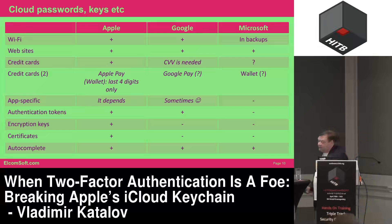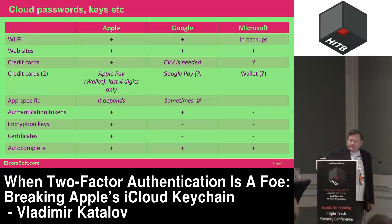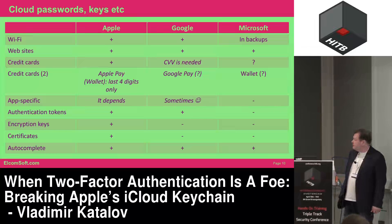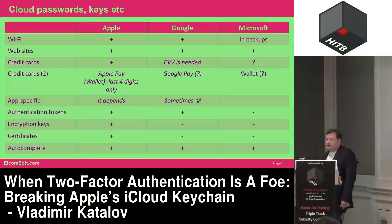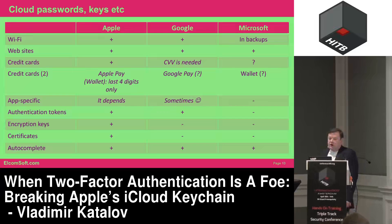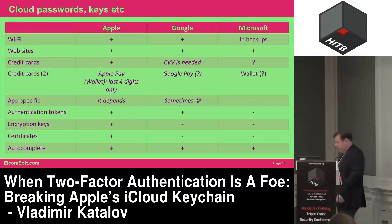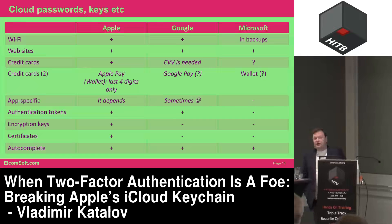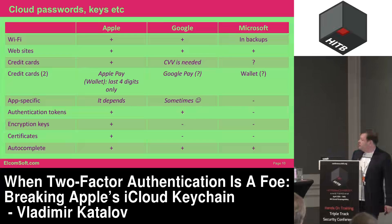Now the most interesting part: passwords. All three vendors use different approaches to storing and encrypting this critical data. There are passwords for Wi-Fi networks and websites you enter. Credit card information is also included in the passwords category because it is saved in about the same way. There are also application-specific passwords, which are actually much harder to extract, mostly because vendors don't follow developer suggestions and don't store passwords the right way — sometimes they are just in configuration files. So for application-specific passwords, there is no 100% guarantee that the passwords are there.